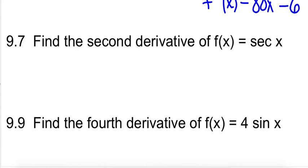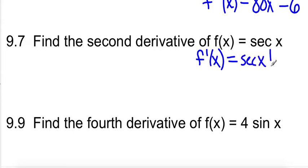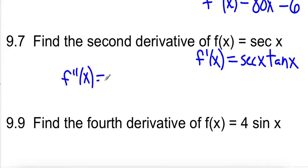We want to find the second derivative of secant. So we need to first get the first derivative. We talked about this yesterday — the derivative of secant is secant tangent. Now we need to take the derivative of that to get the second derivative, and this is going to be a little longer.